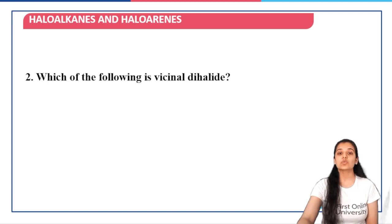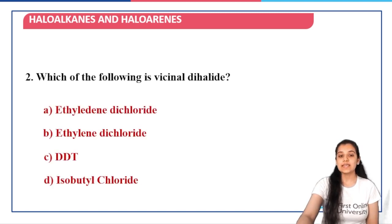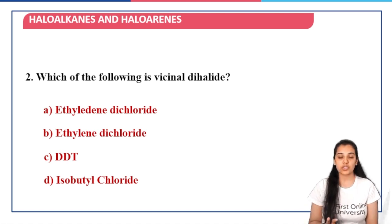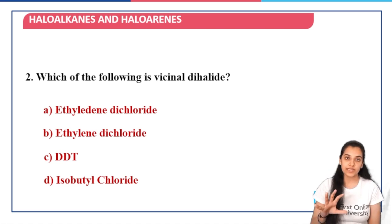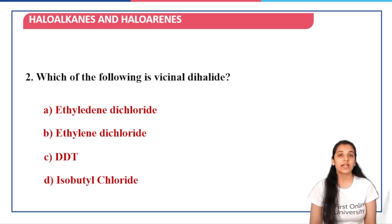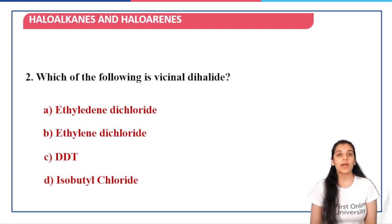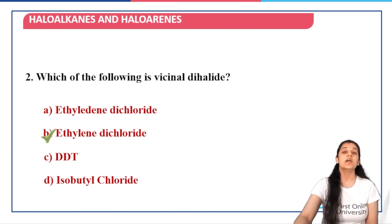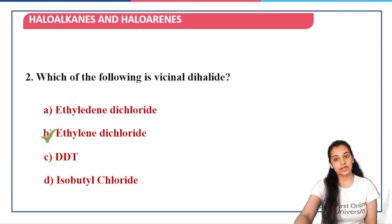The next question is: which of the following is a vicinal dihalide? Isopropyl chloride goes out of the picture because it is a monohalogen compound. We have already seen that ethylidene dichloride is an example of geminal dihalide, and therefore ethylene dichloride is the correct answer — where the two chlorine atoms are attached to two different adjacent carbon atoms.